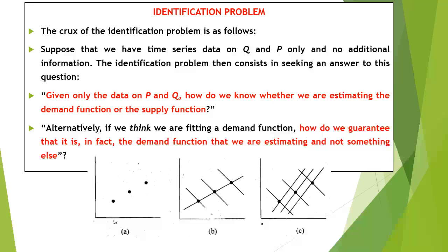From the B and C segments of the diagram, we can see that the same data can arise from two different situations. In segment B, the supply curve is stable and the demand curve shifts — hence the supply function is identified, because the data represents points on the supply function under the assumption that the supply curve is fairly stable and the demand curve shifts. But if both the demand and supply curves are shifting randomly, as shown in segment C, we cannot guarantee that we are estimating the demand function, the supply function, or something else.